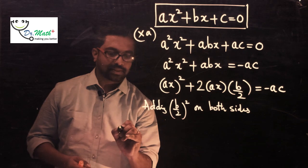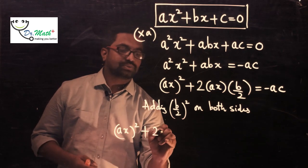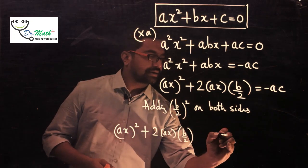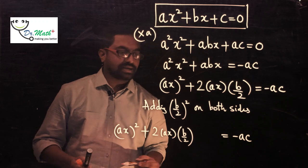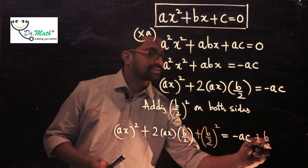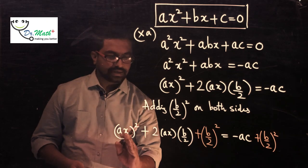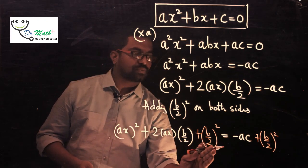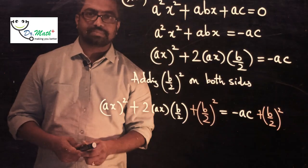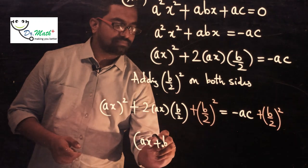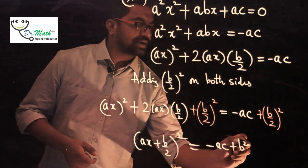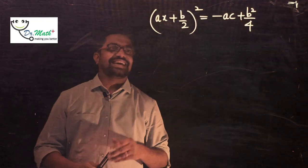So the next step is: (ax)² + 2·(ax)·(b/2) + (b/2)² = −ac + (b/2)². The left-hand side now looks like x² + 2xy + y², which is the expansion of (x + y)². So the LHS can be written as (ax + b/2)², which equals −ac + b²/4.